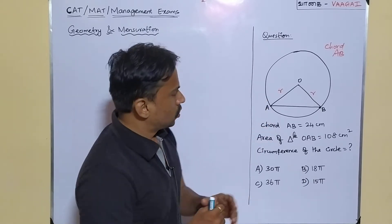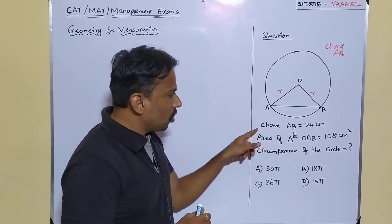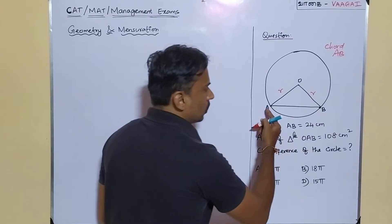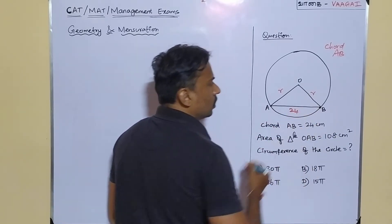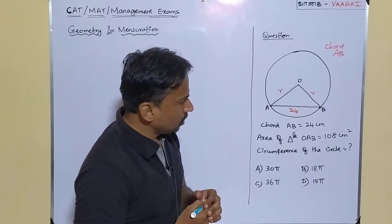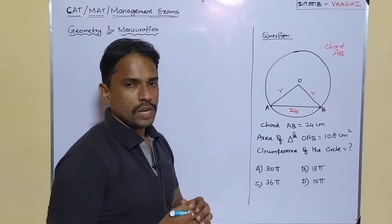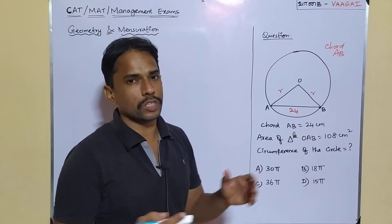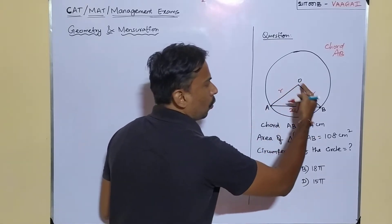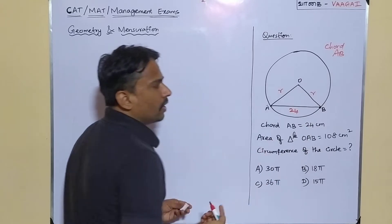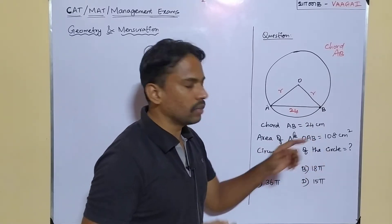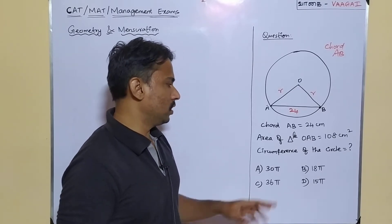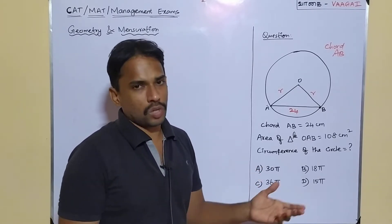The data given: the length of chord AB is equal to 24 centimeters. Also, the area of triangle OAB is given to be 108 centimeters square. Finally, what we are asked to find is the circumference of the circle.